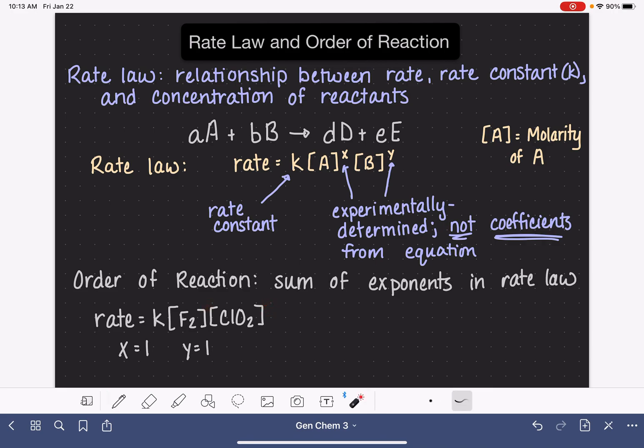When we write no number at all, it's just a 1. So the order of this particular rate law is 1 plus 1, which is a 2, and we call this a second-order reaction.